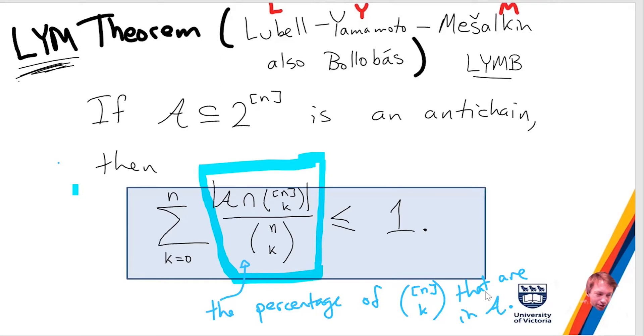And actually, I think it probably is only tight when you do take all the sets of size k for some k, probably. But any other questions, or is this clear, what this is saying?